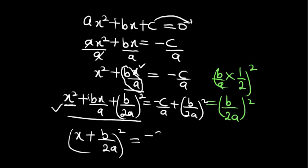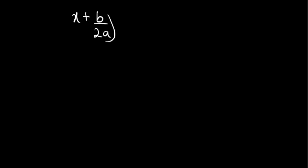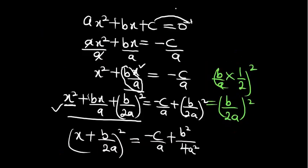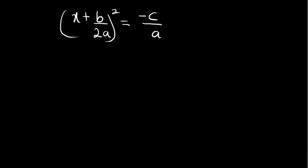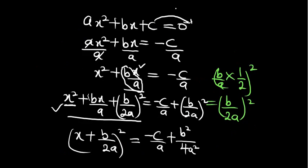We are now going to have (x plus b over 2a)² equals minus c over a plus b² over 4a². Here, b times b gives b², and 2a times 2a gives 4a². So the right-hand side is minus c over a plus b² over 4a².